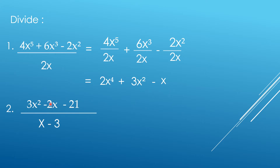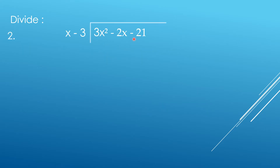Now, what about dividing a trinomial by a binomial? In this case, we're going to use the long method of division, just like dividing the usual whole number — this would be inside the division sign as the dividend, and this is the divisor. So now we have 3X squared minus 2X minus 21 divided by X minus 3.